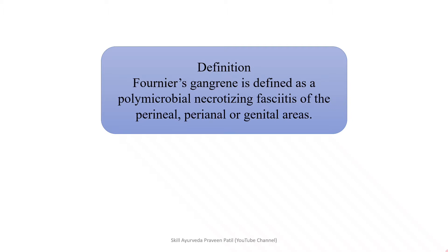Fournier's gangrene is defined as a polymicrobial necrotizing fasciitis of the perineal, perianal, and genital area. This is essentially necrotizing fasciitis, with the difference being polymicrobial infection — multiple microorganisms are involved. The criteria require that a minimum of four variants be traced out to call it Fournier's gangrene. The area involved includes perineal, perianal, and genital area — either male or female genitalia.